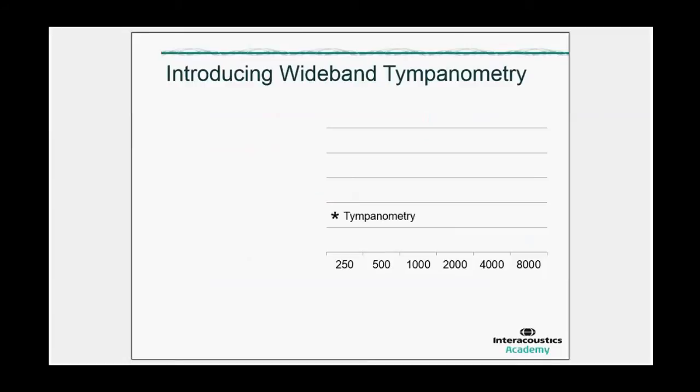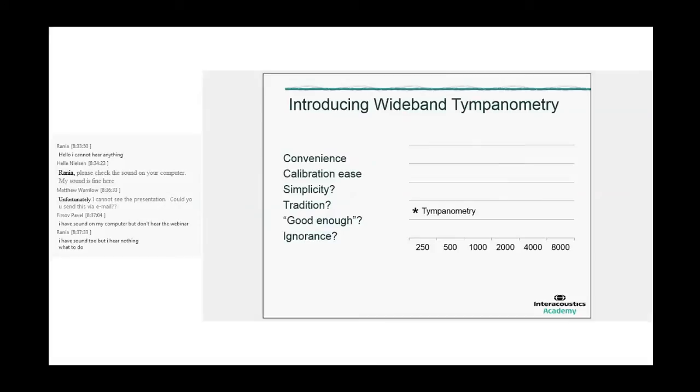Now, why did we accept that tympanometry is using only one or two frequencies? Was it convenience? In fact, it was because the 226 hertz probe tone is chosen because the calibration becomes very easy. So it's convenience and the calibration became easy. Then the consequence is that it maybe made life very simple. Maybe we accepted it because of simplicity. Maybe it became tradition over the last 50 years. And my question is basically, is it not ignorance that we accept one frequency being used?